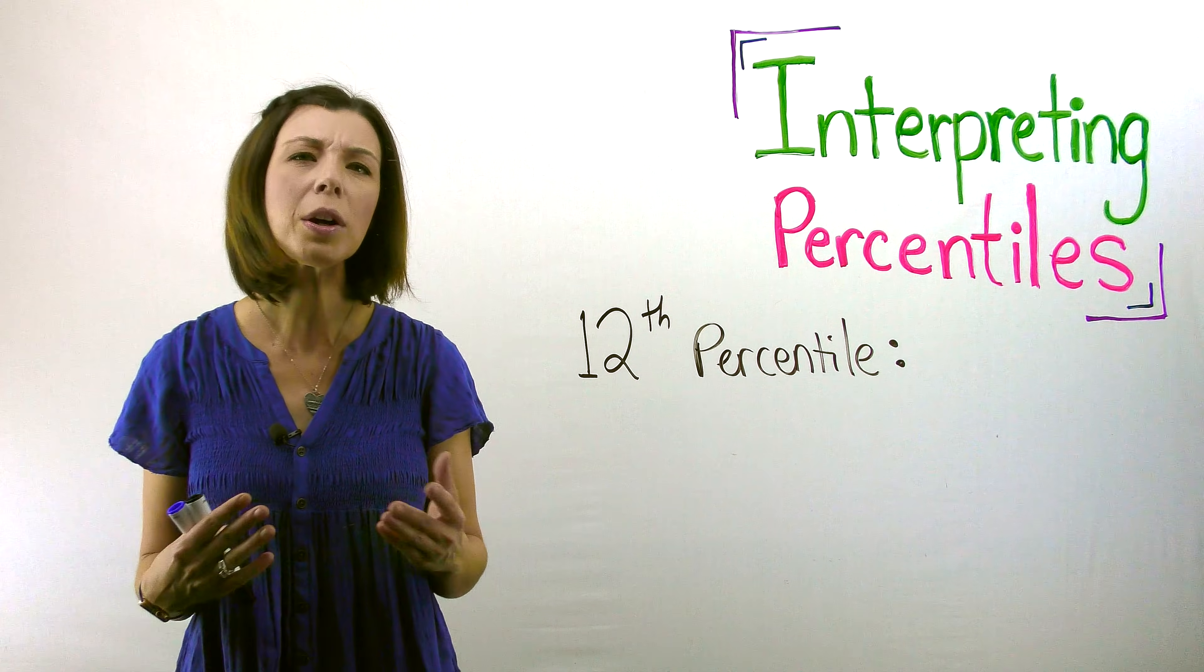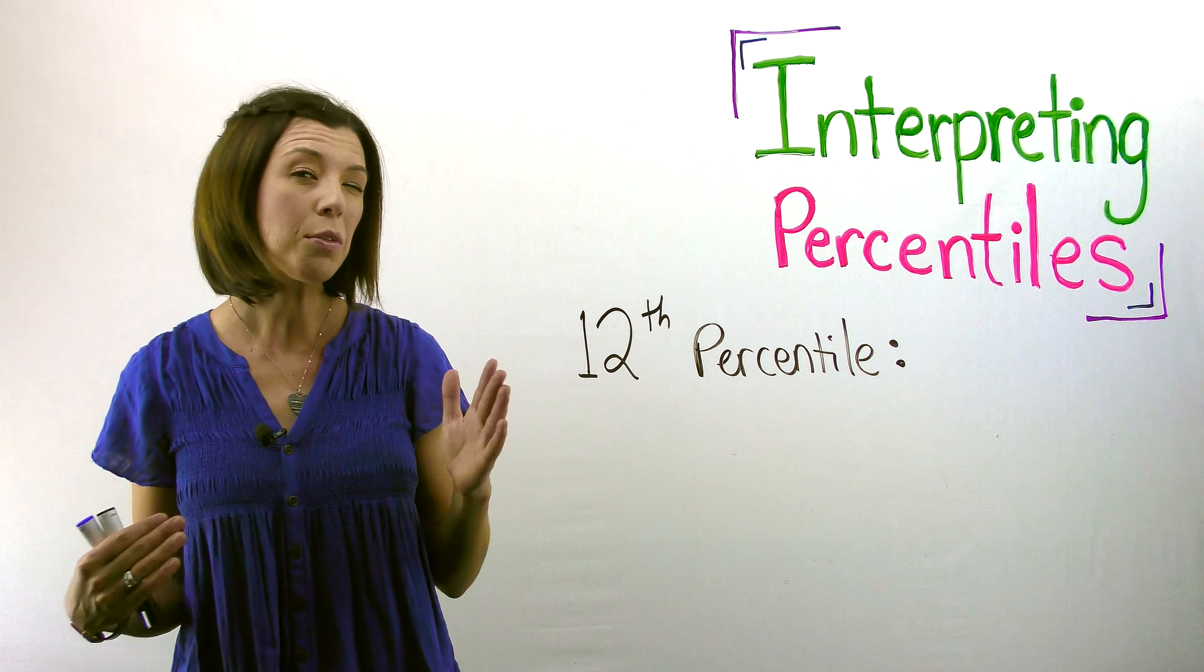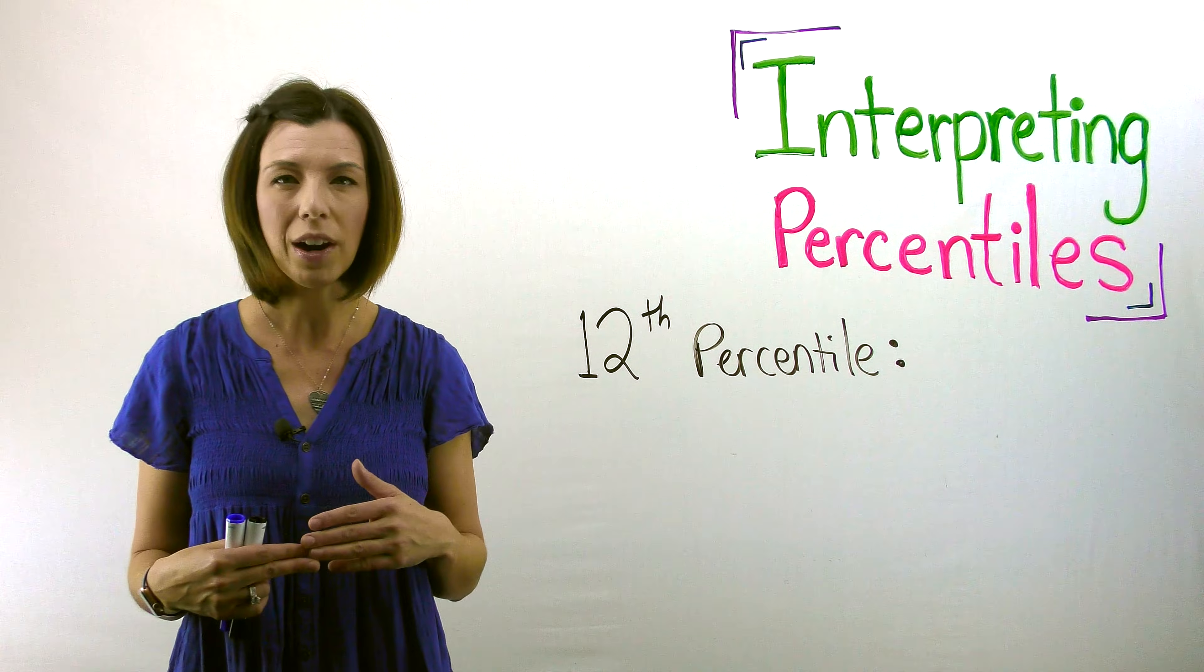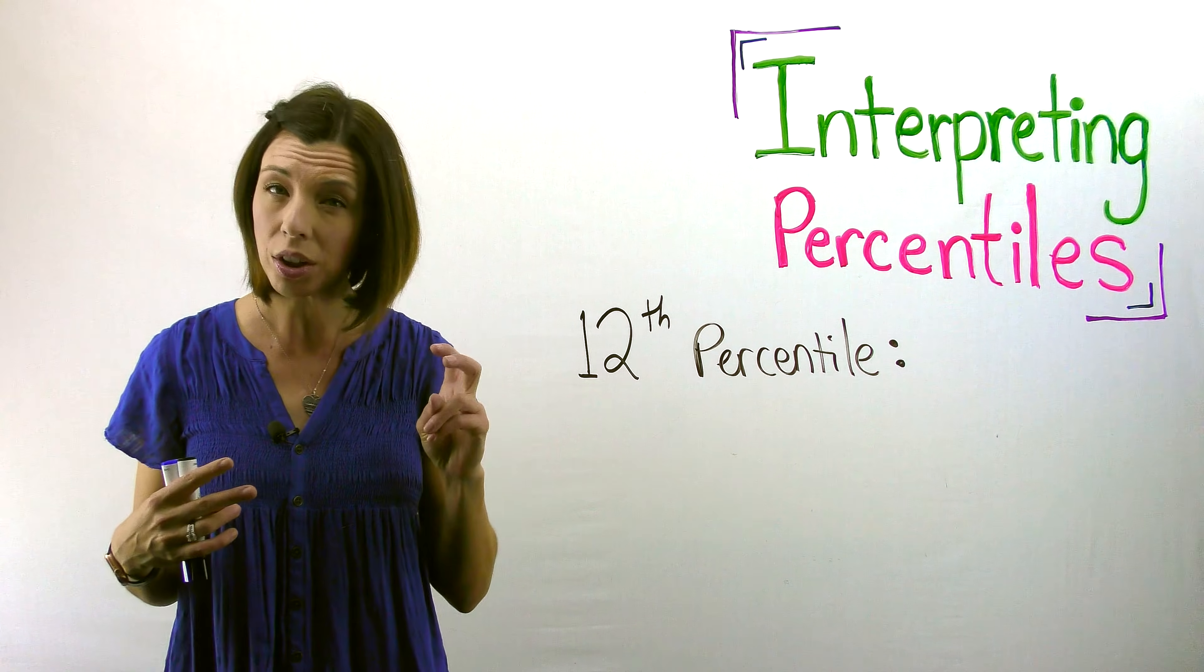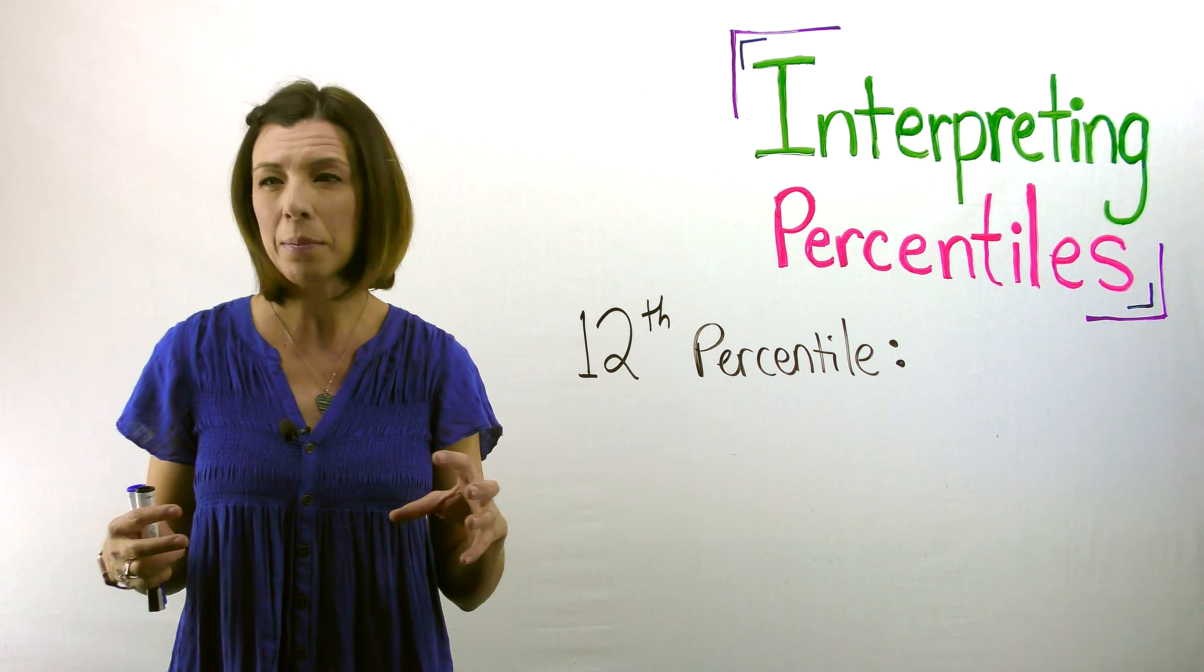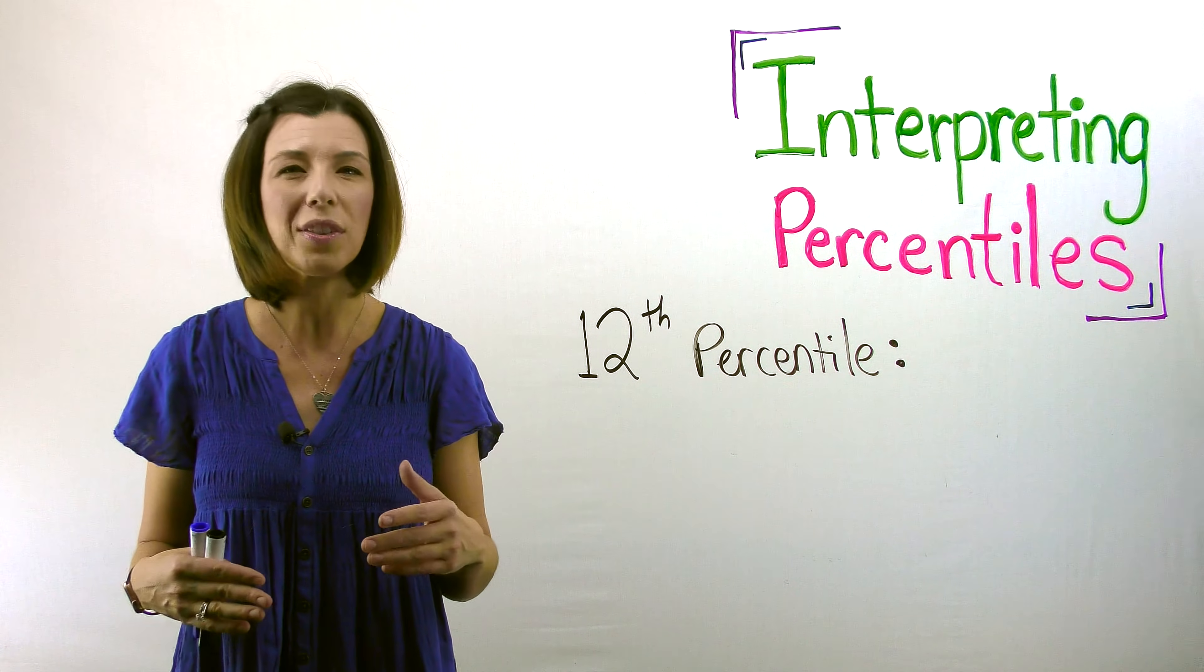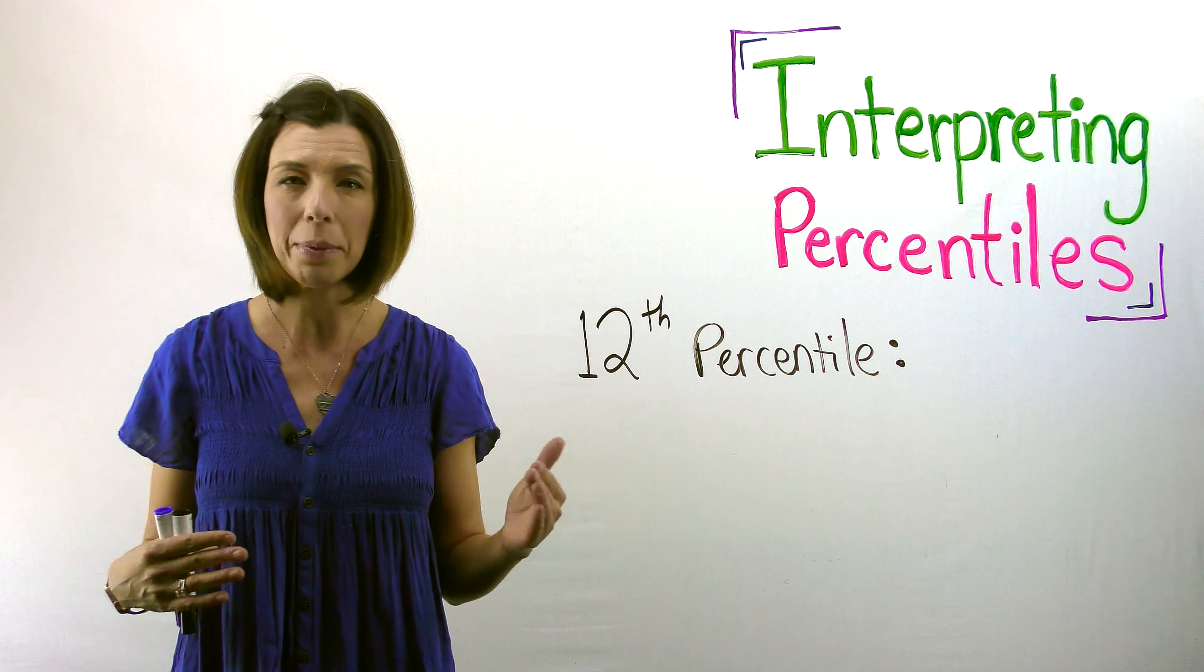Sometimes if you're a parent, we've heard percentiles in the doctor's office. And so maybe you have a really petite baby and they're in the 12th percentile for height. We can interpret that as saying that they are taller than 12% of the babies in that same age band. So they obviously lump them together. It wouldn't make sense for them to compare a two-week-old with a year-old baby. There's going to be a big difference.